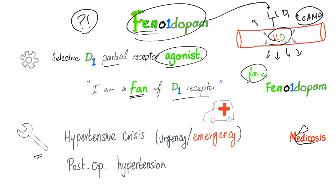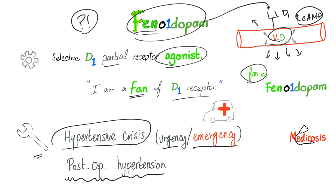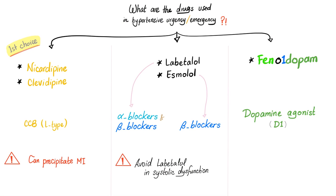The clinical uses of phenoldopam are hypertensive crisis — which could be hypertensive urgency or emergency — and post-operative hypertension. In other words, it is not for outpatient care; it is only for inpatient care, for the serious, acute situations. Phenoldopam is a dopamine agonist that works on the D1 receptor.